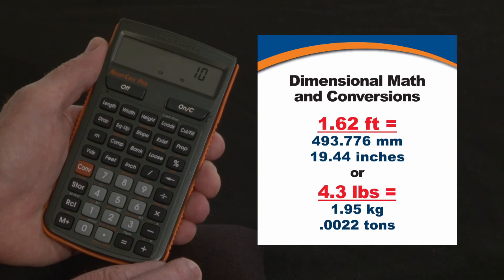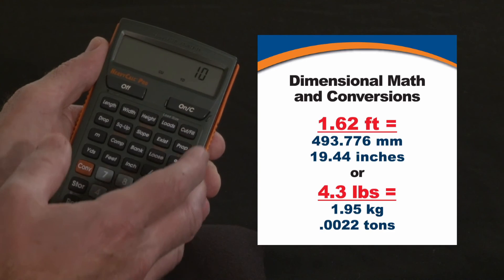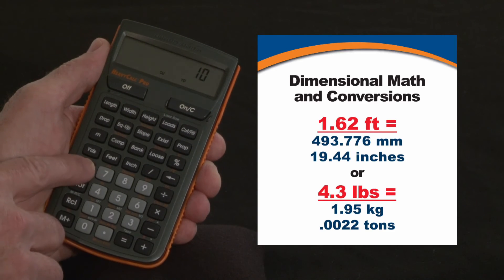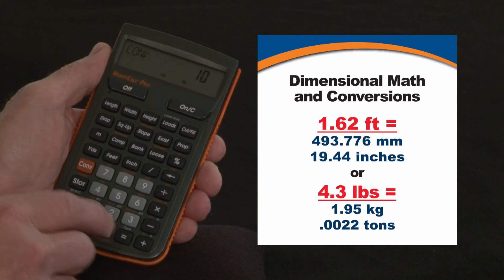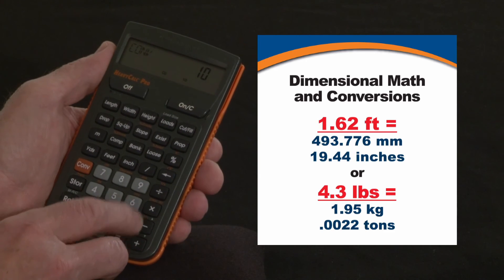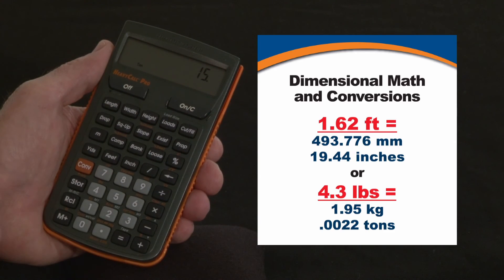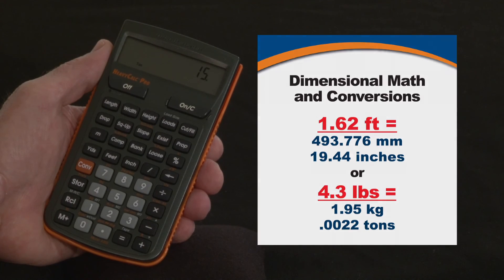You can also convert cubic volumes to weight — for example, convert to tons, such as 15 tons — using the default factor of 1.5 tons per cubic yard.